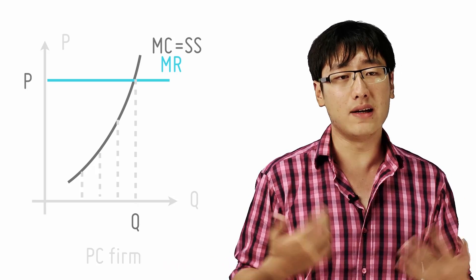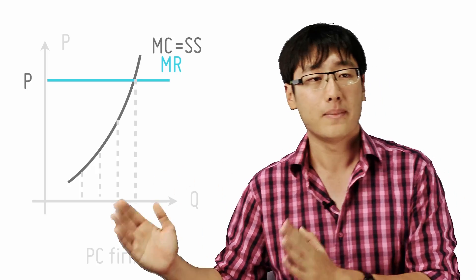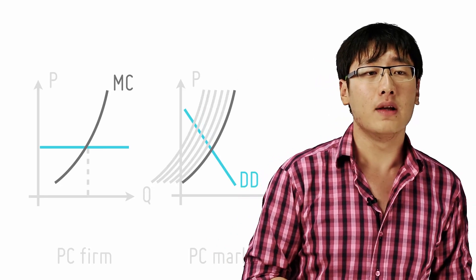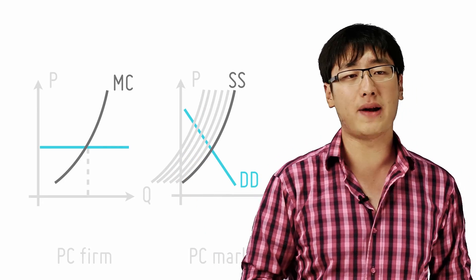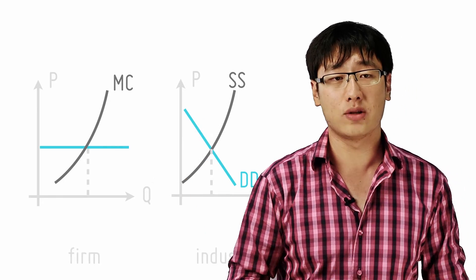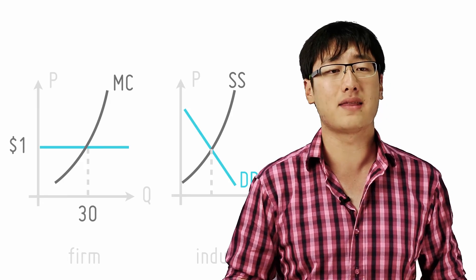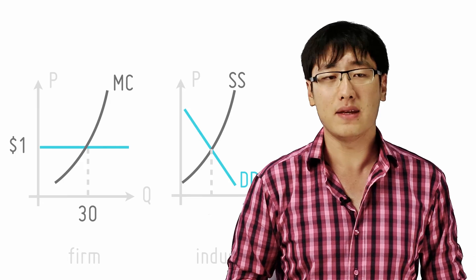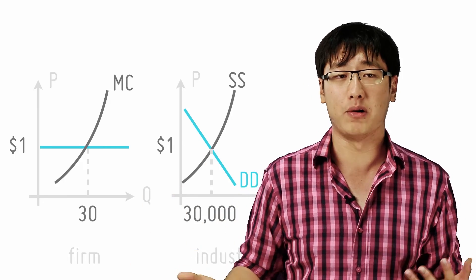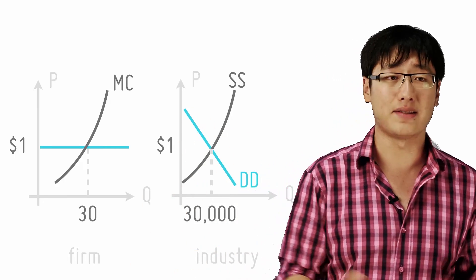Now what about the industry? The industry supply curve is simply the sum of the individual firm's supply curves. Take for example, this firm. It is able to supply 30 units of apple at $1 each. So if the industry has a thousand firms, then it simply means that the industry will be able to supply 30,000 apples at $1 each. It's that simple.